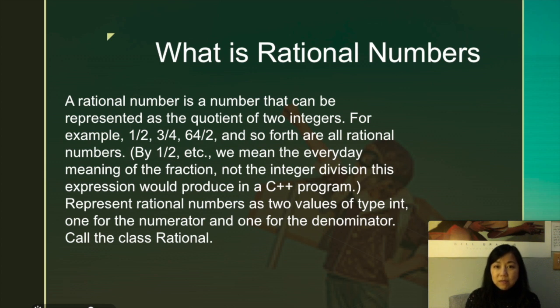So what is a rational number? A rational number can be represented as basically like three over four or 15 over seven, something like that. So basically it has two integers and then has a slash in between. That's how we represent a rational number.